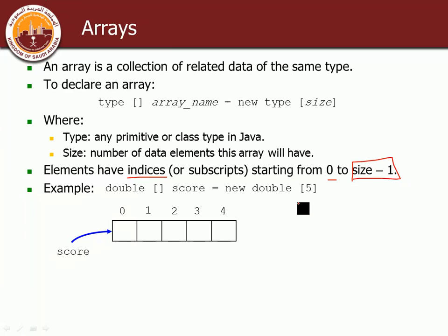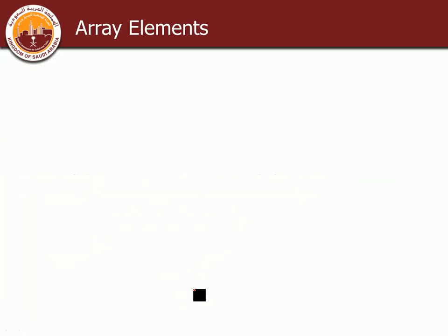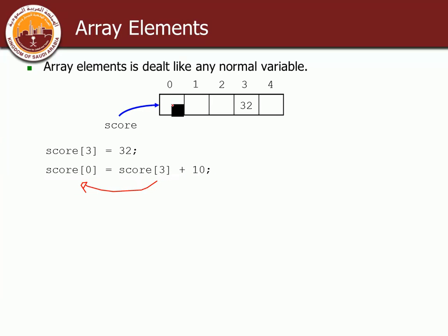If the size is five, indices go from 0 to 4. To access an element, give the array name with the index in brackets — for example score[0] or score[2]. You can assign values like: score[3] = 32, and then score[0] = score[3] + 10, which takes the value in score[3] (which is 32), adds 10, and puts the result in score[0].